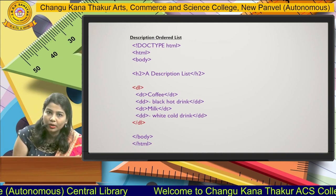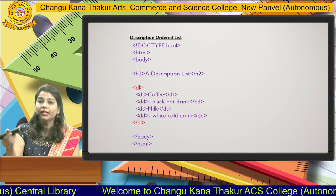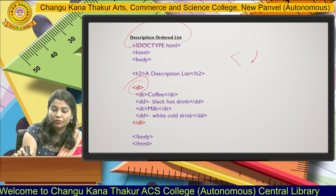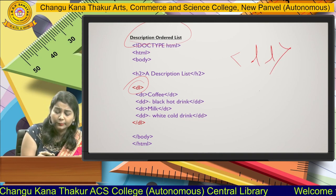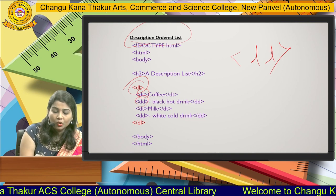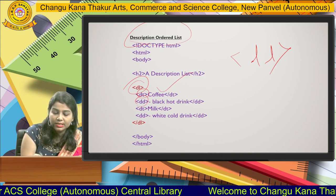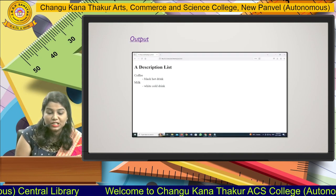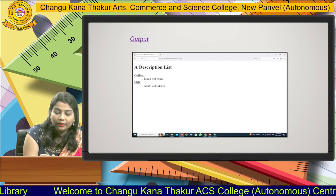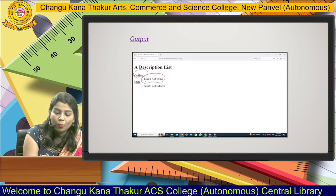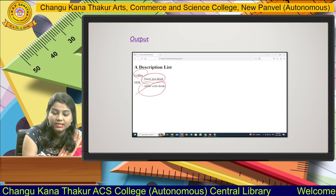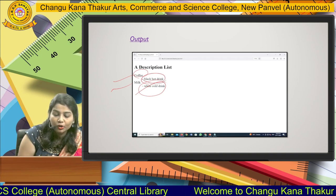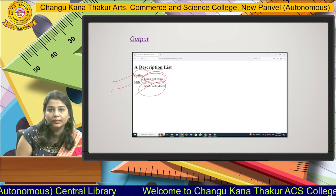Next is the description list. A description list is used when you have a list with a sub-list under it. For this purpose, use the DL tag — description list — and under it use the description term. For example, 'coffee' is a term, and under coffee the descriptions are 'black hot drink' or 'milk white cold drink'. The expected output is: coffee, then indented below it — black hot drink, milk white cold drink. We have two basic terms — coffee and milk — and under coffee we describe black and hot. That is the purpose of the description list.